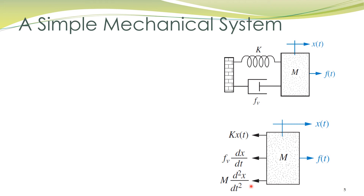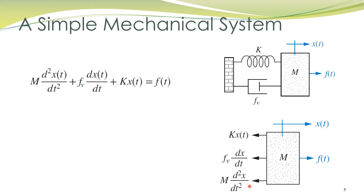The mathematical model is obtained by writing the force balance equation — the sum of forces acting towards the left equals the sum of forces acting towards the right: m·d²x/dt² + fv·dx/dt + kx = f(t). The first term is the force due to inertia, the second term is the force due to the viscous damper, and the third term is the force due to the spring.